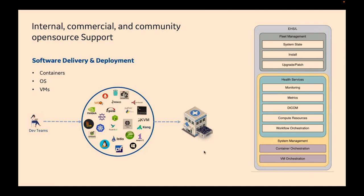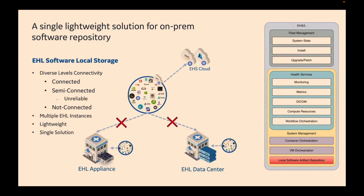If we're going to have all these different types of software, we're going to need a single lightweight solution to store these things on-premise. Because if I don't have connectivity, or if I have intermittent or slow connectivity, I can't necessarily just download this software every time I want to do an install or launch a container pod — I have to store that software locally on my system.